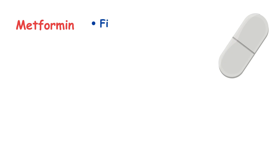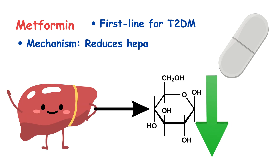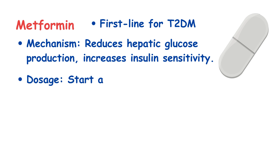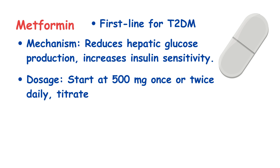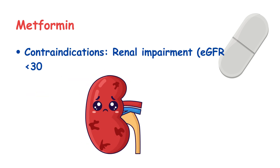Metformin is the first-line therapy for type 2 diabetes. It works by reducing glucose production in the liver and enhancing insulin sensitivity. Start with 500 mg once or twice daily and titrate to a maximum of 2500 mg per day. Be cautious in renal impairment and avoid if eGFR is below 30.